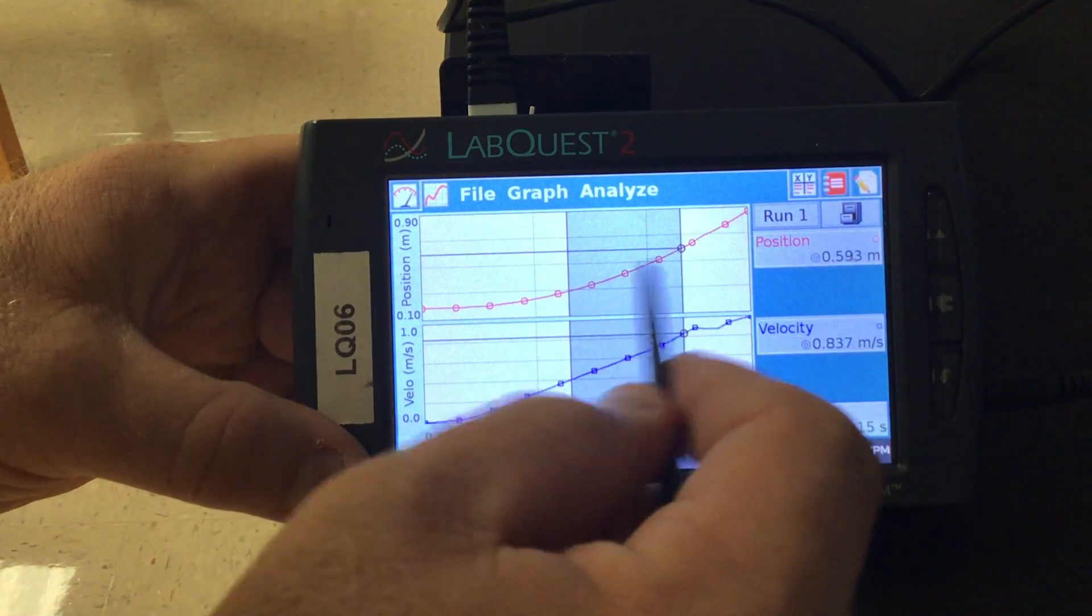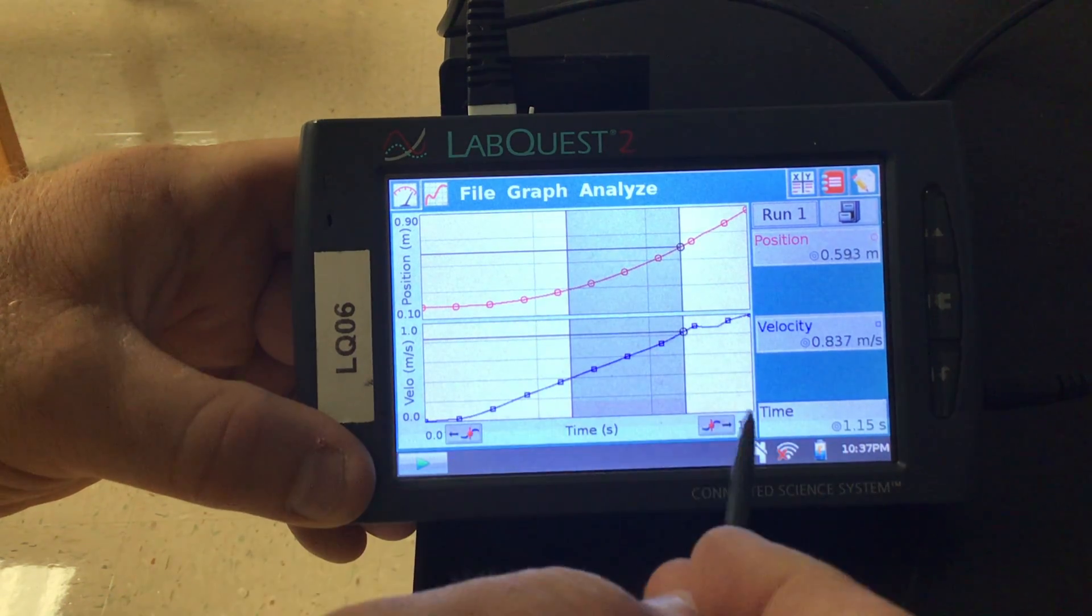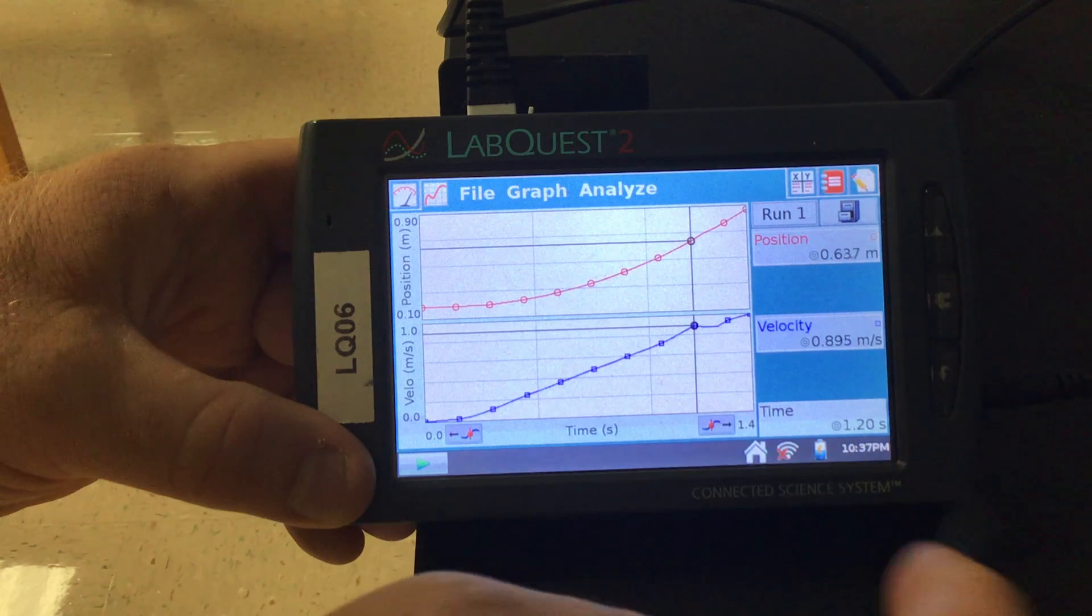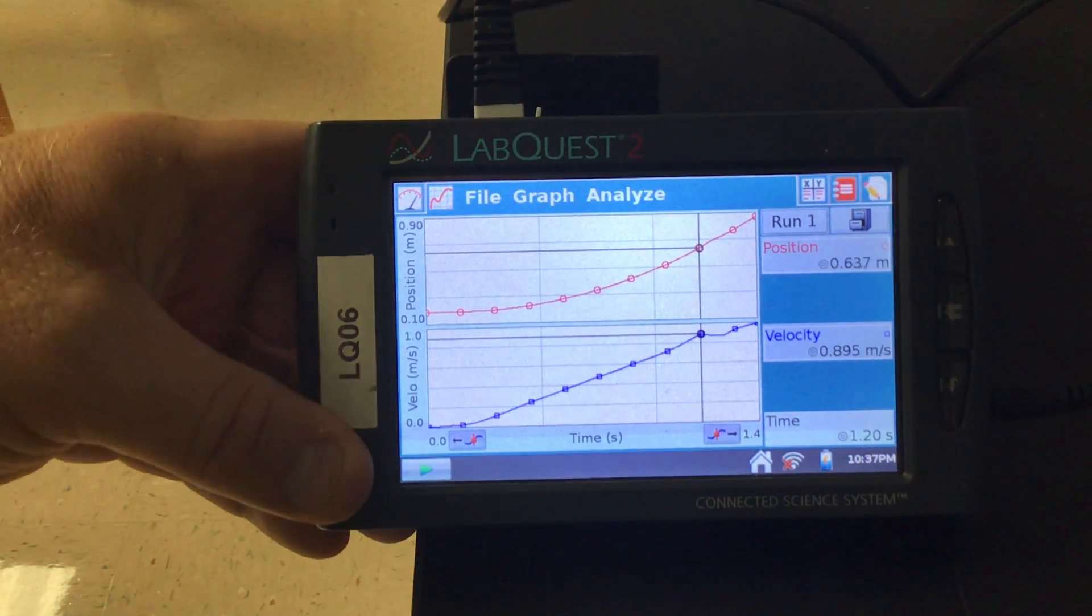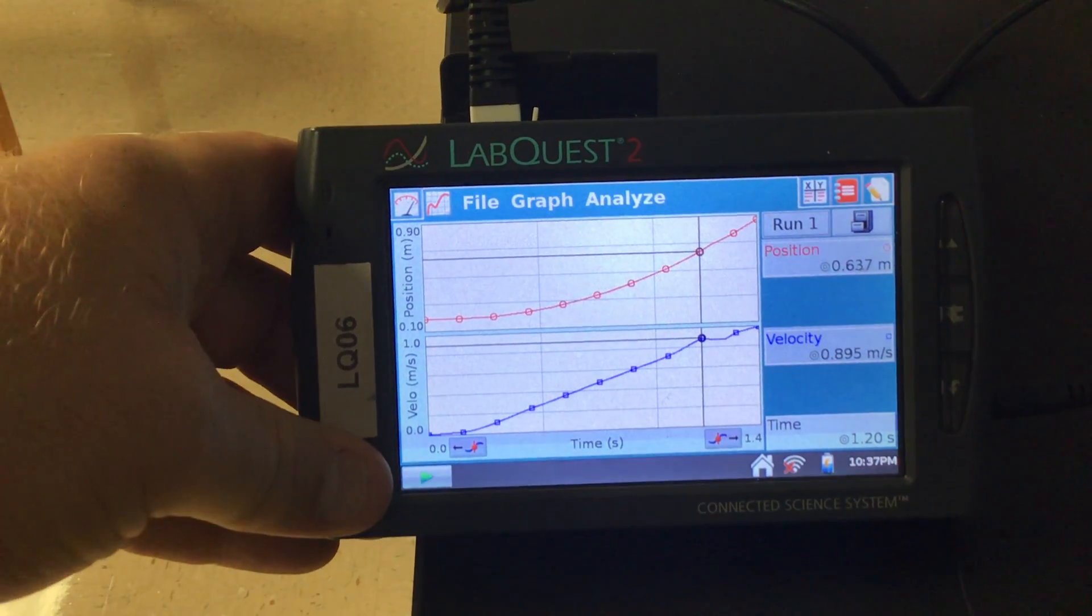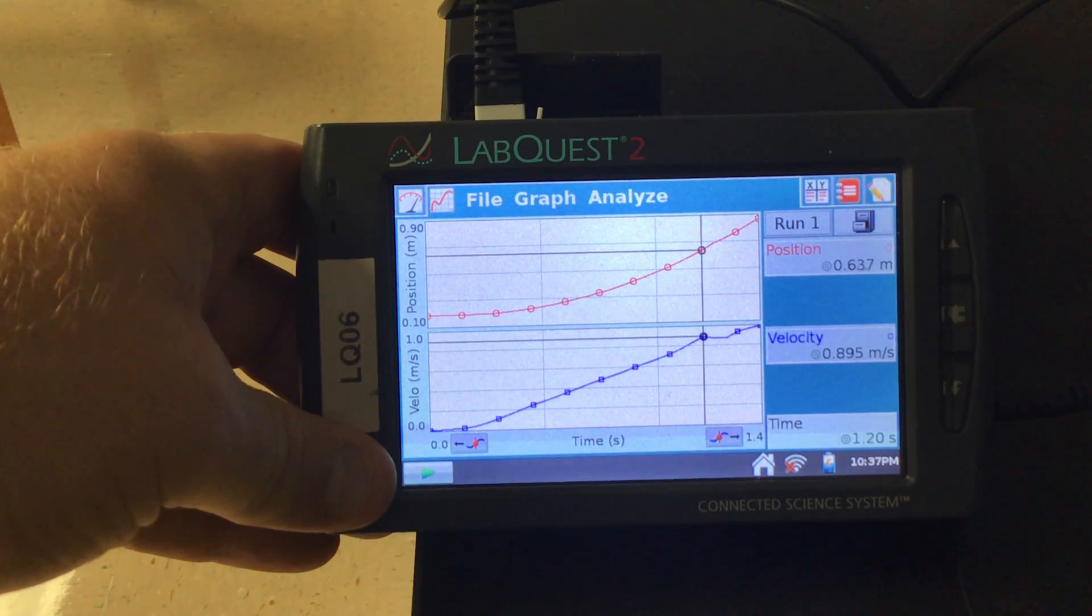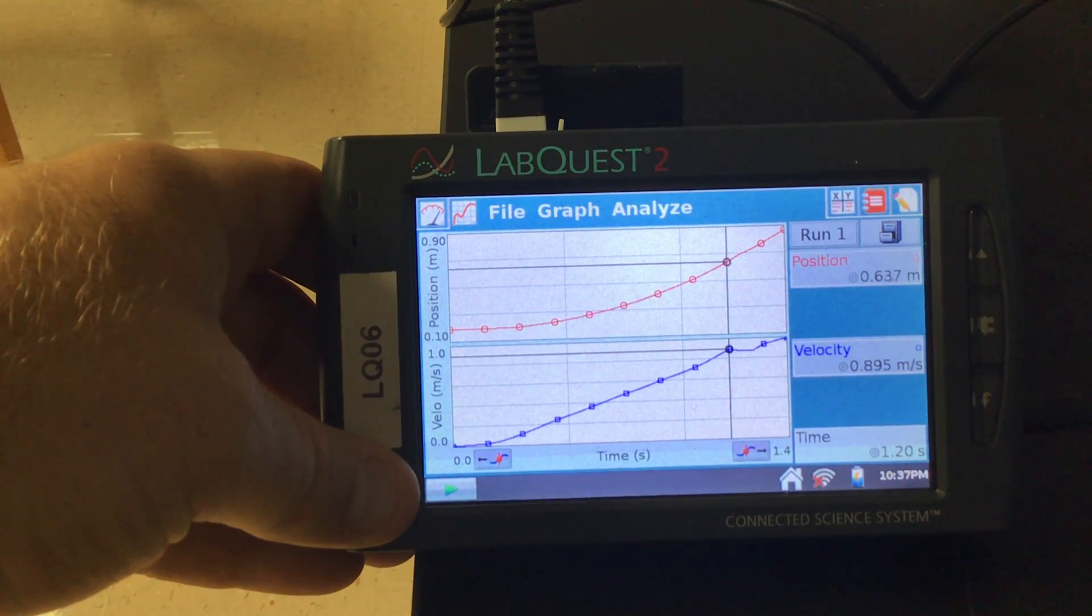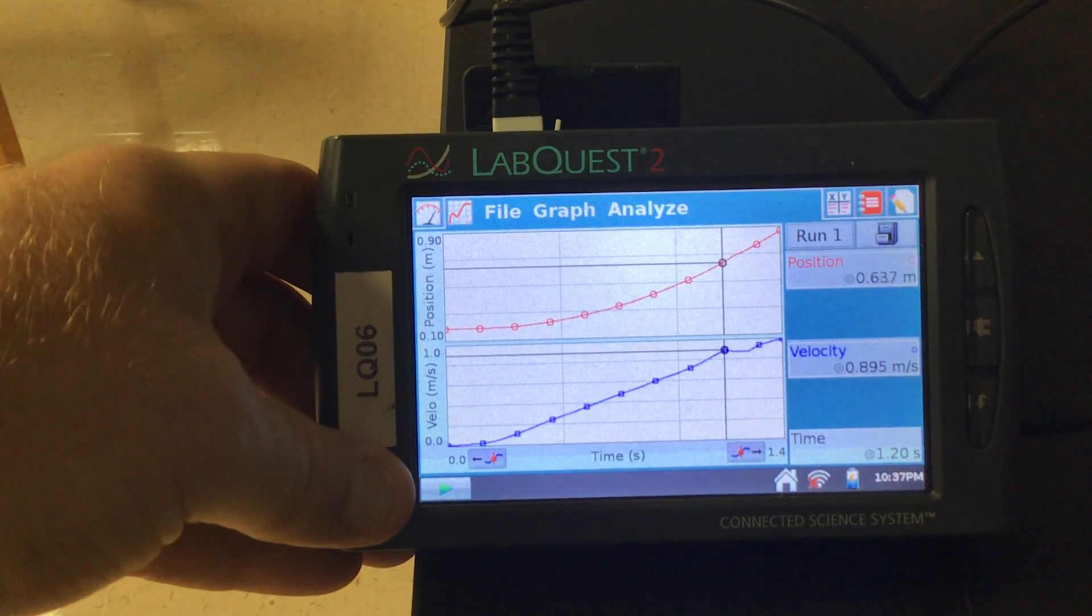Now obviously this is not a linear slope up here. So if we want to do a slope of a line, you want to use the bottom one here. Okay guys, that should give you all the information you need to do the lab and help you analyze this and answer your questions. If you're having trouble getting a good graph like this, call me over and I will help you with your timing. Thank you.